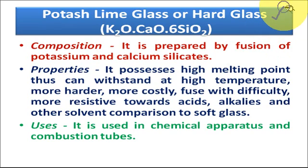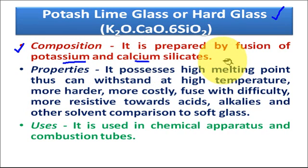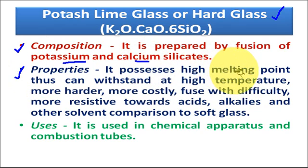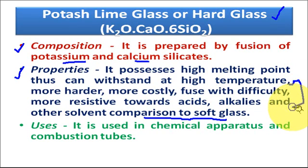Next is potash lime glass, also known as hard glass. Its chemical formula is K2O·CaO·6SiO2, and it is a mixture of silicates of potassium and calcium. Its properties include a high melting point, greater hardness, higher cost, and difficulty in fusing. It is more resistive towards acids, alkalis, and other solvents compared to soda lime glass. It is used in chemical apparatus and combustion tubes.